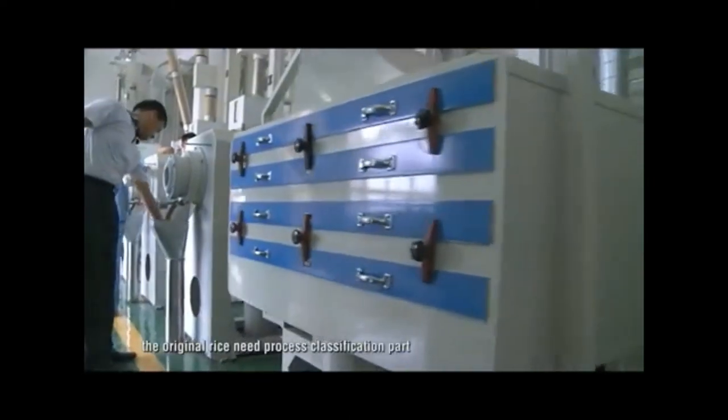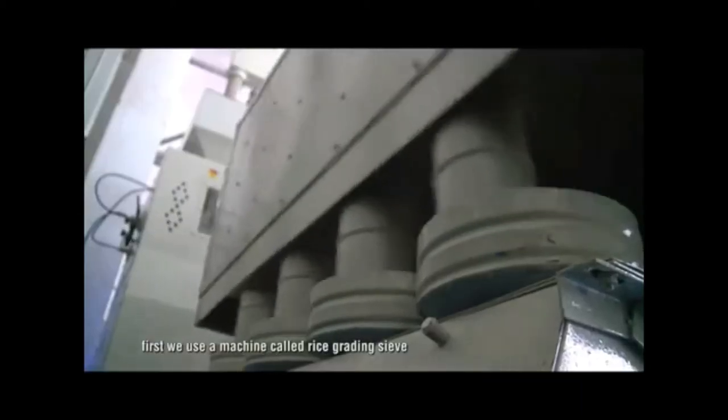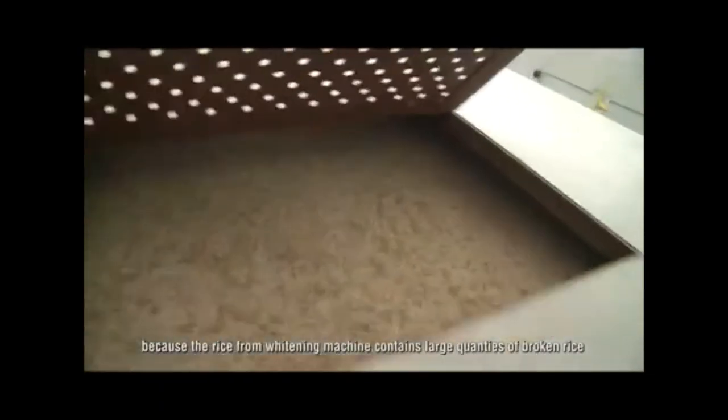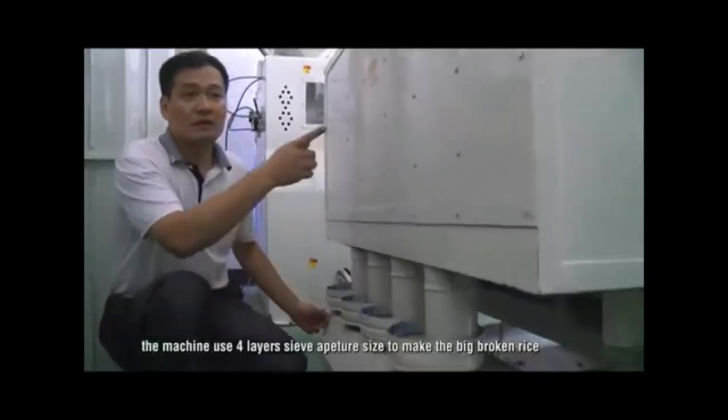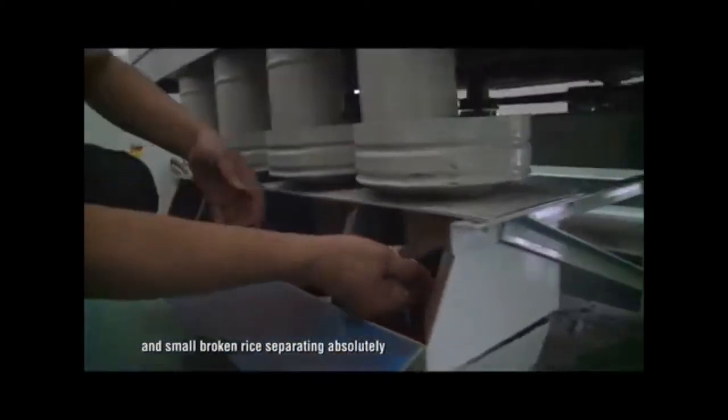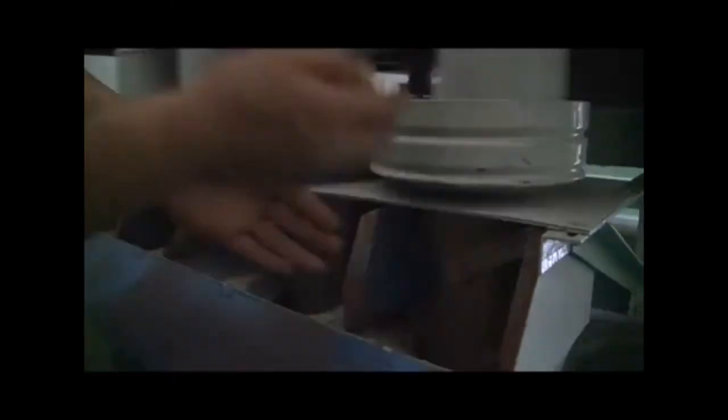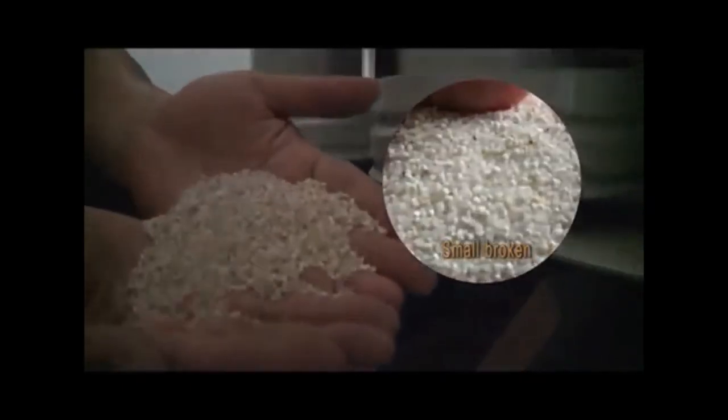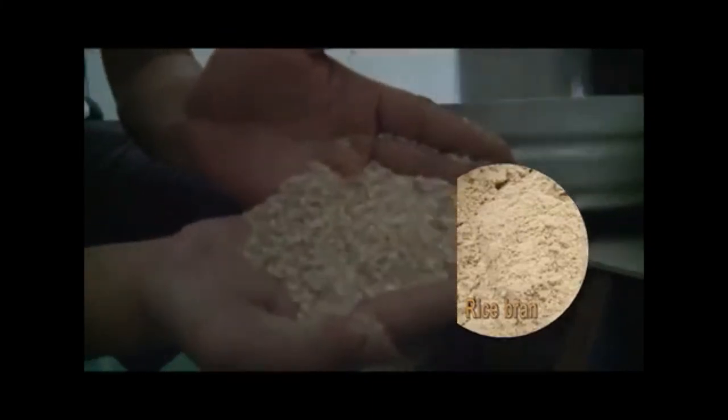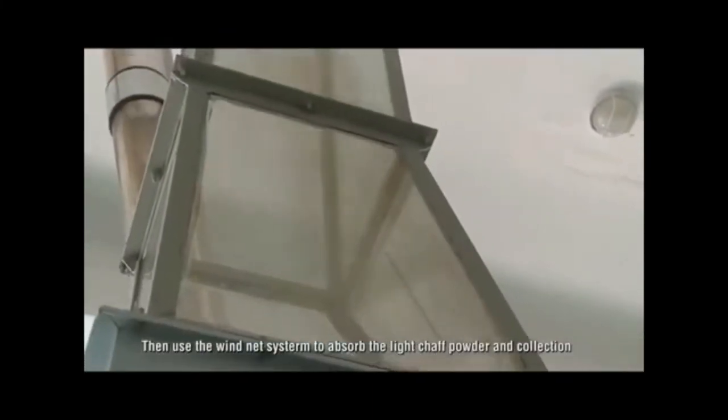After whitening part, the white rice needs to be processed through classification part. First we use a machine called rice grading sieve because the rice from whitening machine contains large quantities of broken rice and chaff powder produced during the processing. The machine uses four layer sieves of different sizes to make big broken rice and small broken rice separate absolutely.